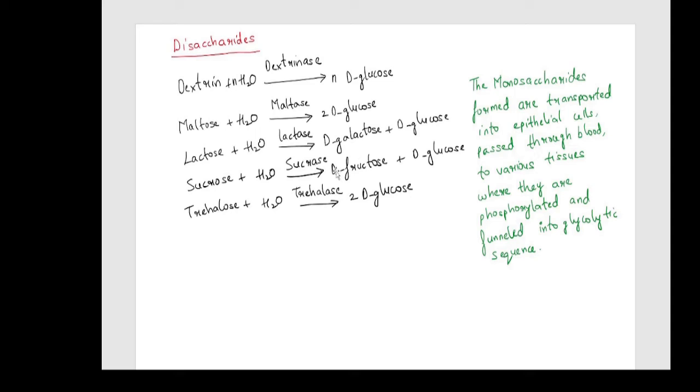Sucrase acts on sucrose to give out one molecule of D-fructose and D-glucose each. Trehalase acts on trehalose to give out two molecules of D-glucose.